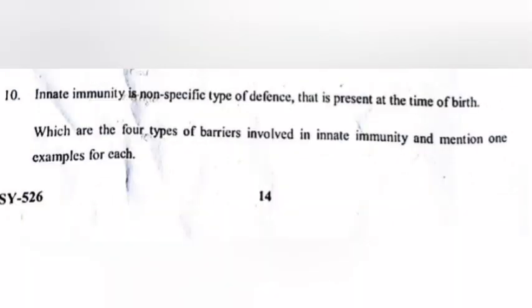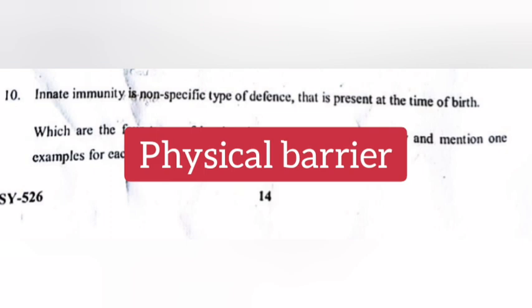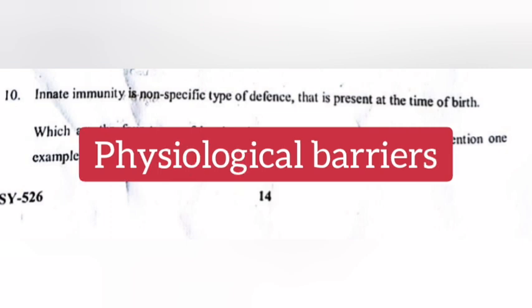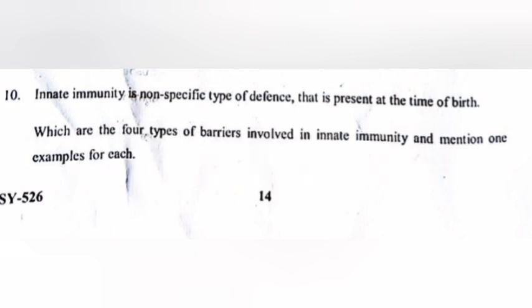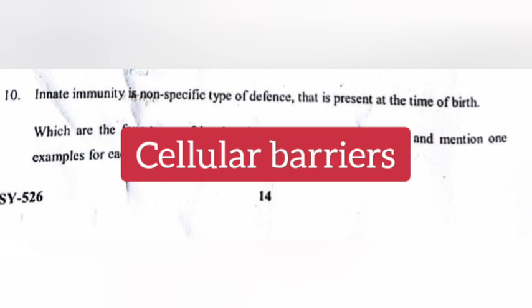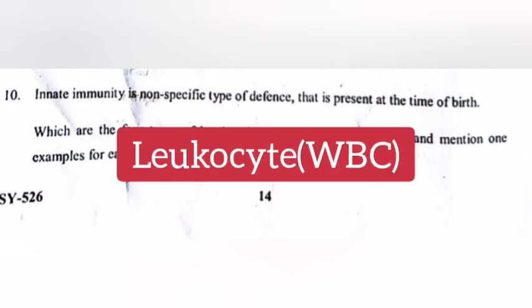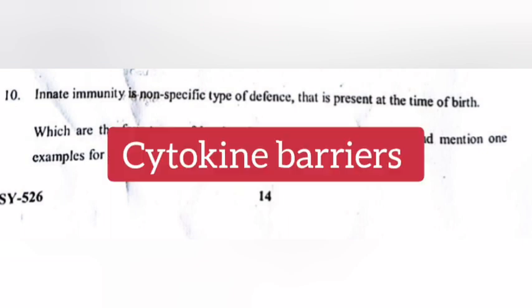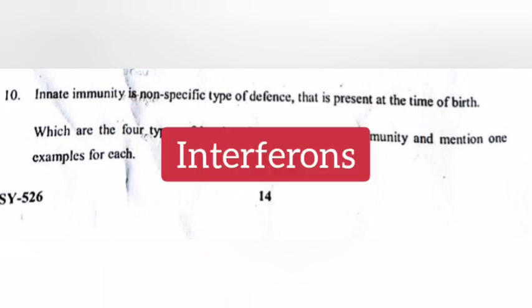Question 10: Innate immunity is a non-specific type of defense that is present at the time of birth. What are the four types of barriers involved in innate immunity? Mention one example for each. Answer — 1: Physical barrier, example: skin; 2: Physiological barriers, example: pH in stomach, saliva, tears; 3: Cellular barriers, example: leucocytes, WBC; 4: Cytokine barriers, example: interferons.